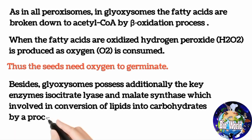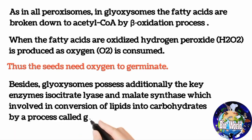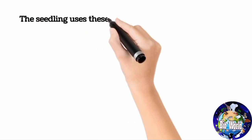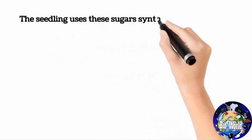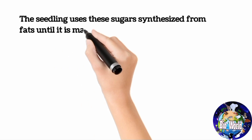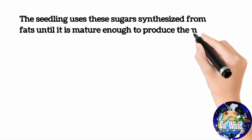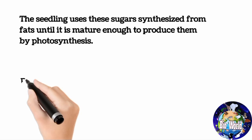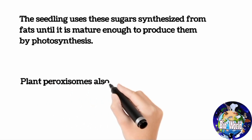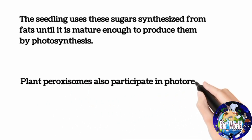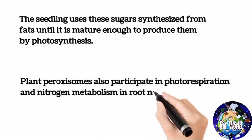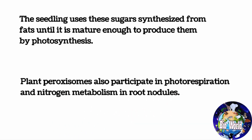This conversion occurs by a process called the glyoxylate cycle. The seedling uses these sugars synthesized from fats until it is mature enough to produce them by photosynthesis. Plant peroxisomes also participate in photorespiration and nitrogen metabolism in root nodules.